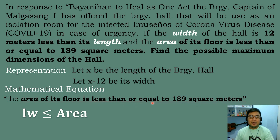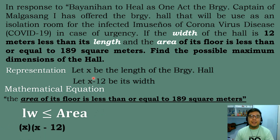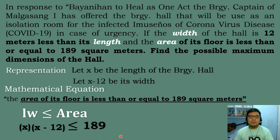The area of its floor is less than or equal to 189 square meters. So our formula becomes: length times width is less than or equal to the area. Substituting, we get x times (x minus 12) is less than or equal to 189. This is our working inequality.